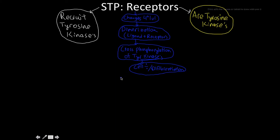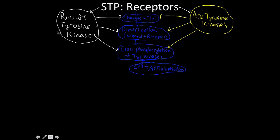One of the first ways we ever discovered mechanisms of cancer was based on tyrosine kinases. For the receptors that recruit tyrosine kinases, the commonly used type are known as JAK kinases — short for Janus kinases, named after the two-faced Roman god Janus, because of the two-sided nature of the dimerization.